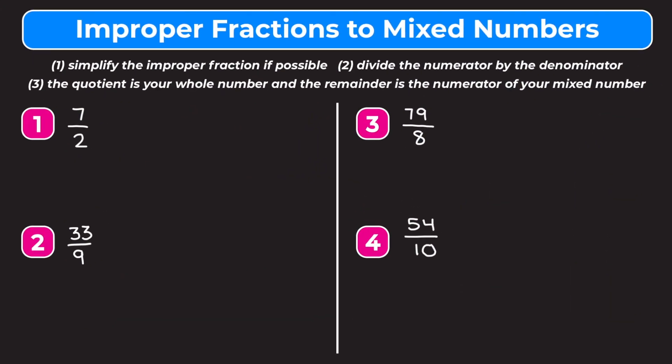In this video we're learning how to convert improper fractions to mixed numbers. Improper fractions are fractions where the numerator is greater than the denominator. For example, in example one we have seven over two, and our numerator of seven is greater than our denominator of two. Mixed numbers are fractions written with a whole number part and a fraction part.